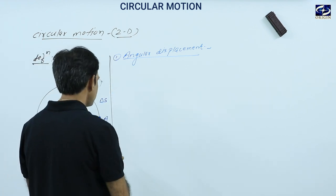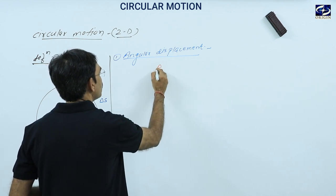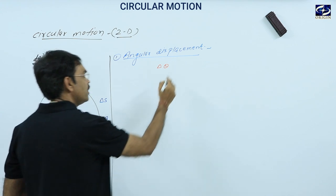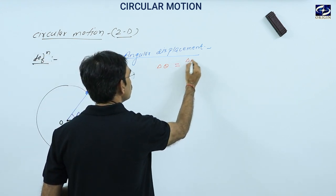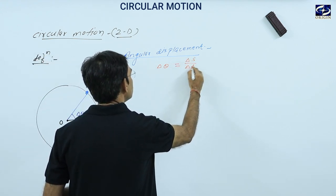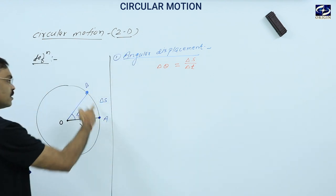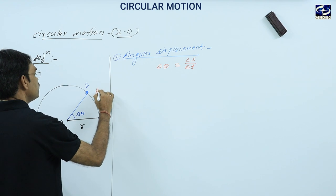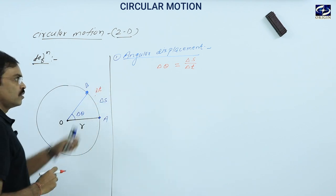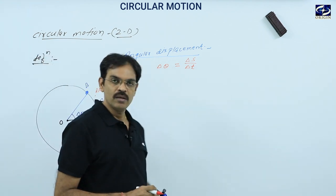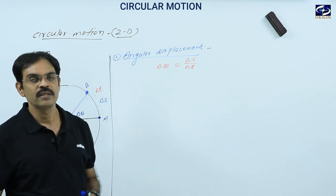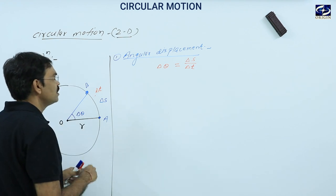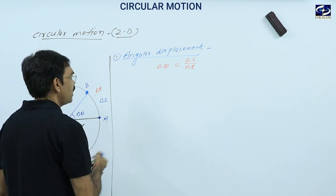Angular displacement is represented by del theta. Del theta is the angular displacement, and it is also equal to del S upon R, where del S is the arc of the circle. All values are variable, therefore it is represented by del. Angular displacement defined. Now the next term is angular velocity.